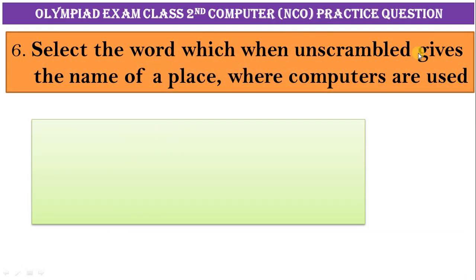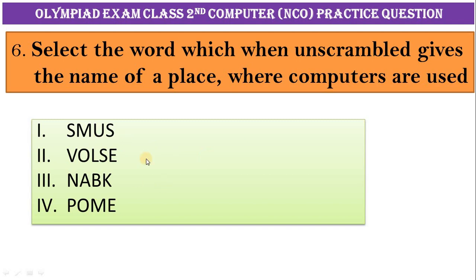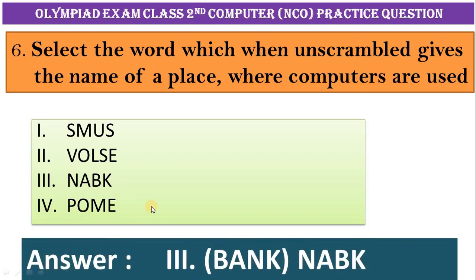Select the word which when unscrambled gives the name of a place where computers are used. One, SMUS. Two, BOLSE. Three, ABK. Four, P-O-M-E. Correct answer is bank.